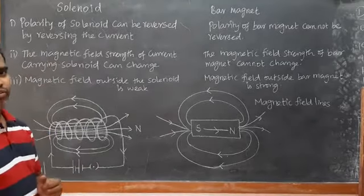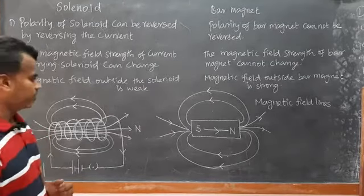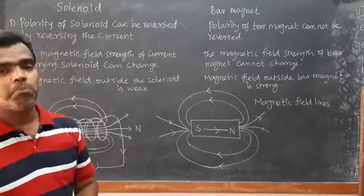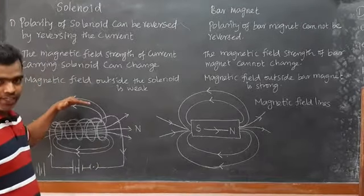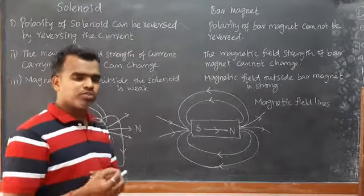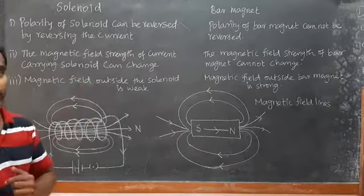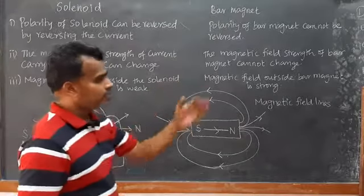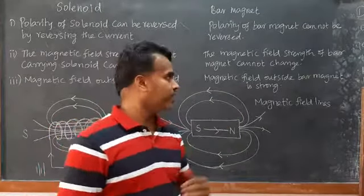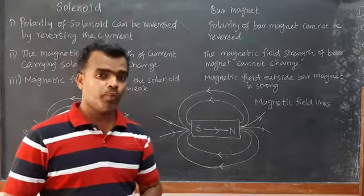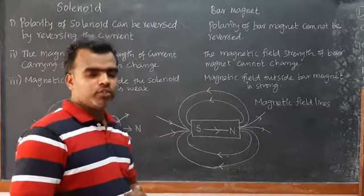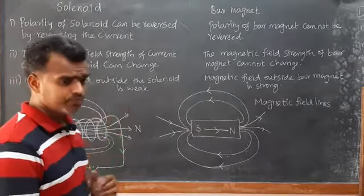Third difference: the magnetic field outside the solenoid is weaker compared to the bar magnet. Outside the solenoid, the field is very weak, whereas the bar magnet can easily attract magnetic objects nearby. The magnetic field outside the bar magnet is stronger compared to that outside the solenoid.